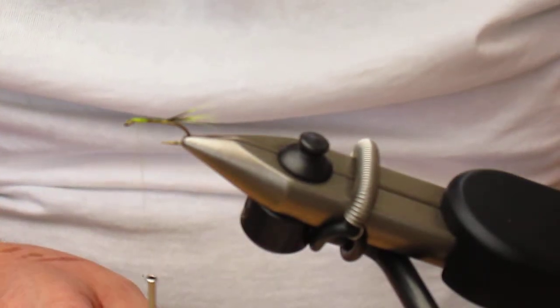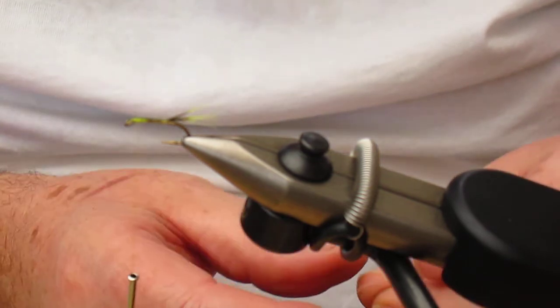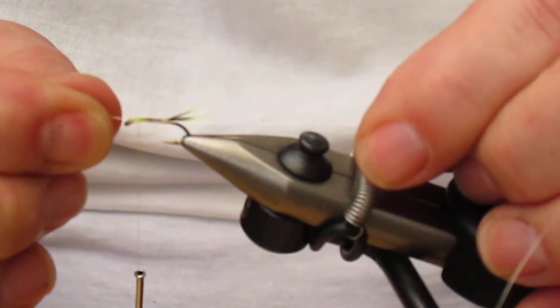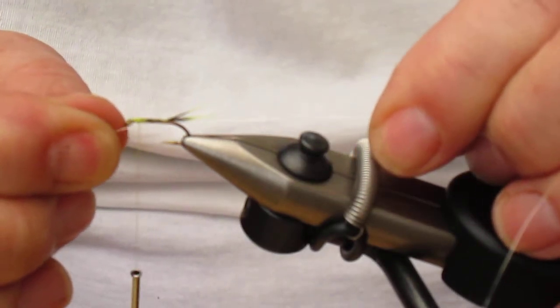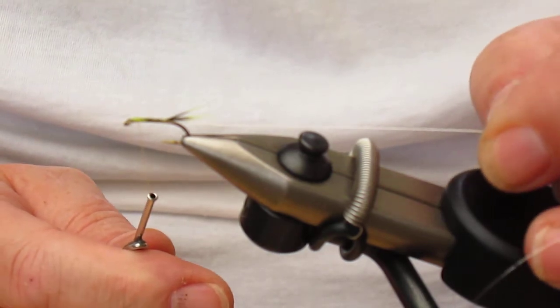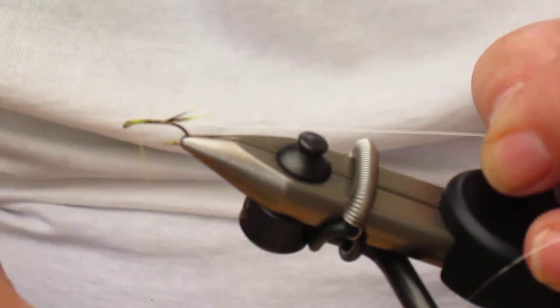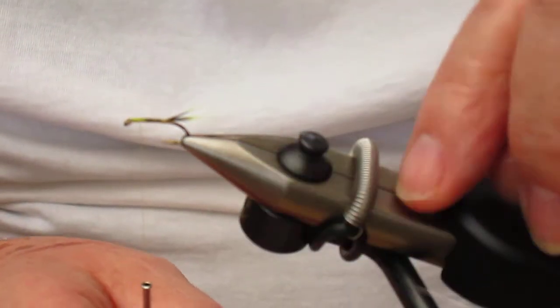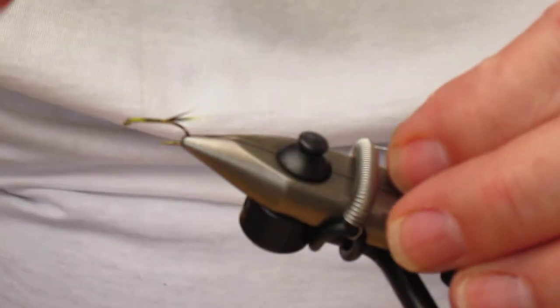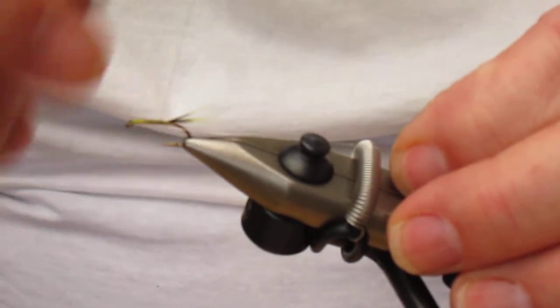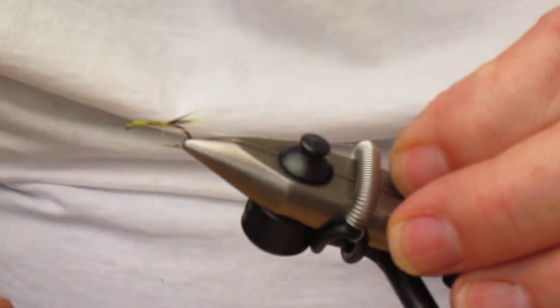Now this fly has a reinforcing rib which is soft silver wire, which we're going to attach as so. You will see what I'm actually doing. There we go. Now we take the thread down the hook to the position we tied the tail.